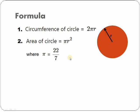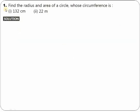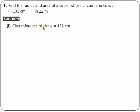With this much knowledge of formula, let's see the first question. Question number 1 from exercise 20d. The question says: find the radius and area of the circle whose circumference is given. So for number 1, the given circumference of the circle is 132.